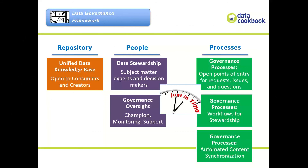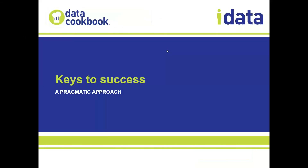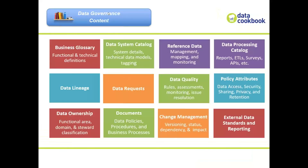You can act on those points of entry through the stewardship workflow, and additionally have automated points for synchronizing information about your data systems automatically. You want to automate content synchronization as much as possible. So the main thing about the framework is the people, the processes, and the repository. Then the question is: what are you governing? What are you storing? What are the people doing and the processes acting upon? That's where the content comes in — the data intelligence or data governance content.